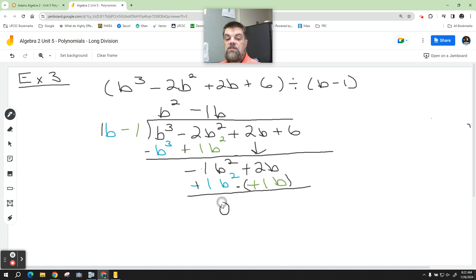What is 1b, or what is 2b minus 1b? 1b. Now we don't need to write the zero down. I just write that down so you guys can see it. But this is just 1b.